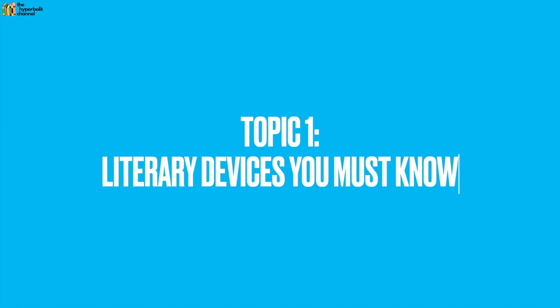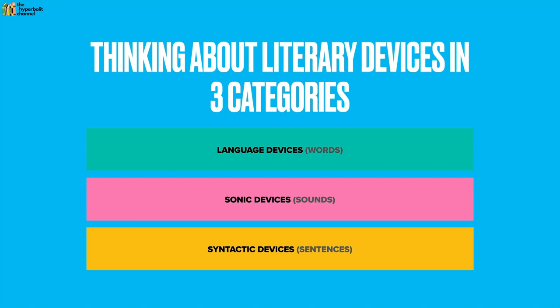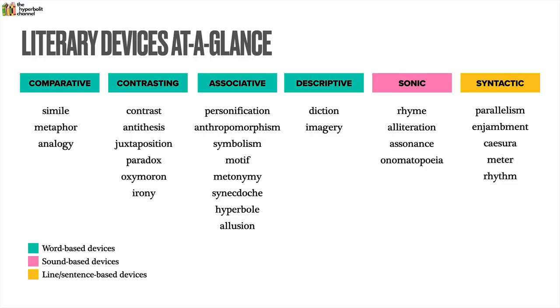Here's just an overview of those three pillars, and with that let's jump straight into our first topic. I want us to think about literary devices in three main categories. The first category is language devices — the ones based on words. The second is sonic devices, related to sound in poetry. And finally there are syntactic devices, which are related to lines or sentences. There are obviously many other more advanced literary devices, but for now, the ones in front of you are the ones we absolutely must know at a foundation level.